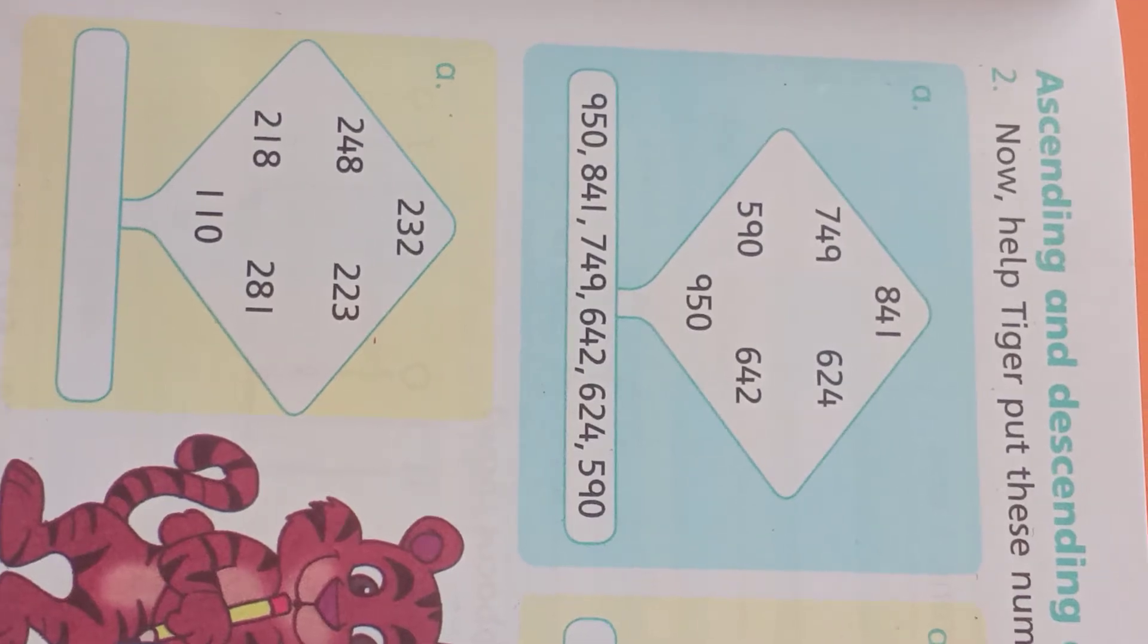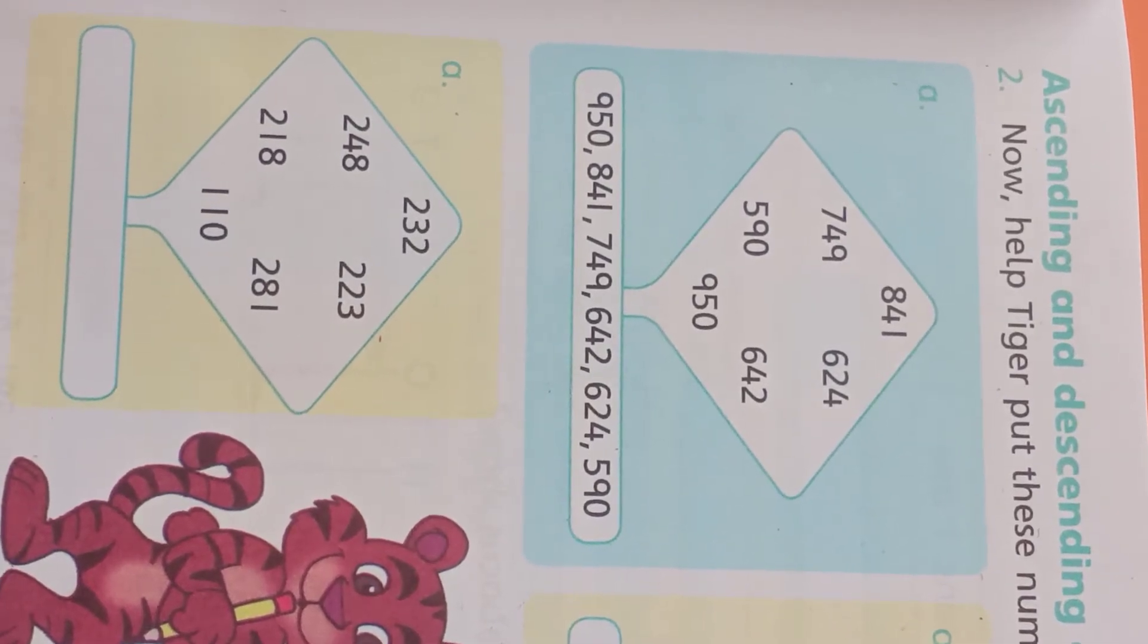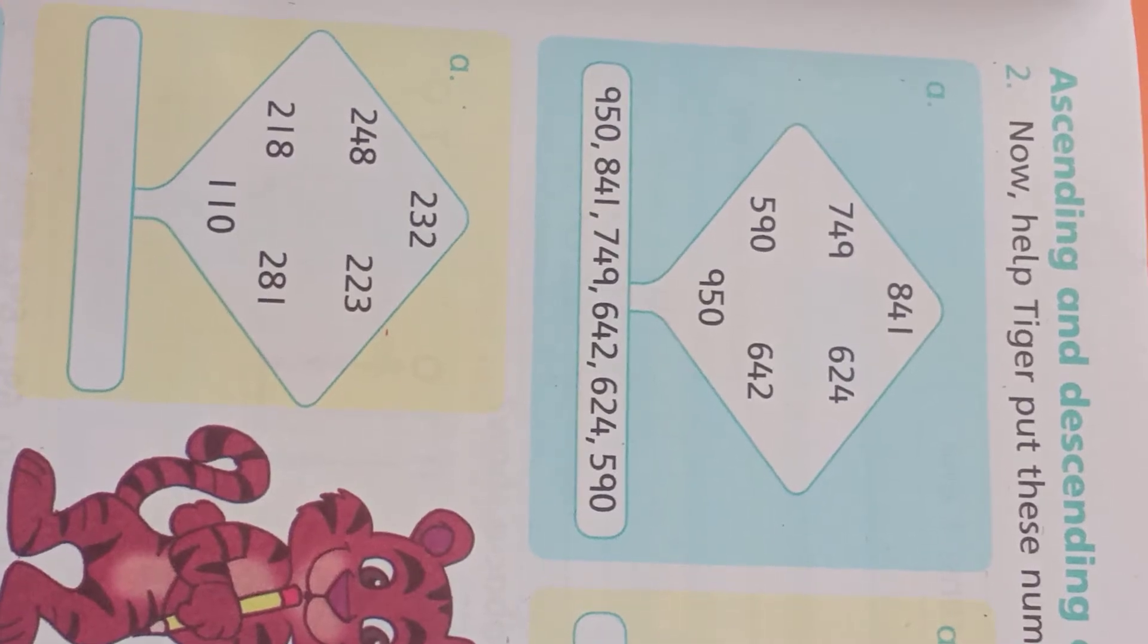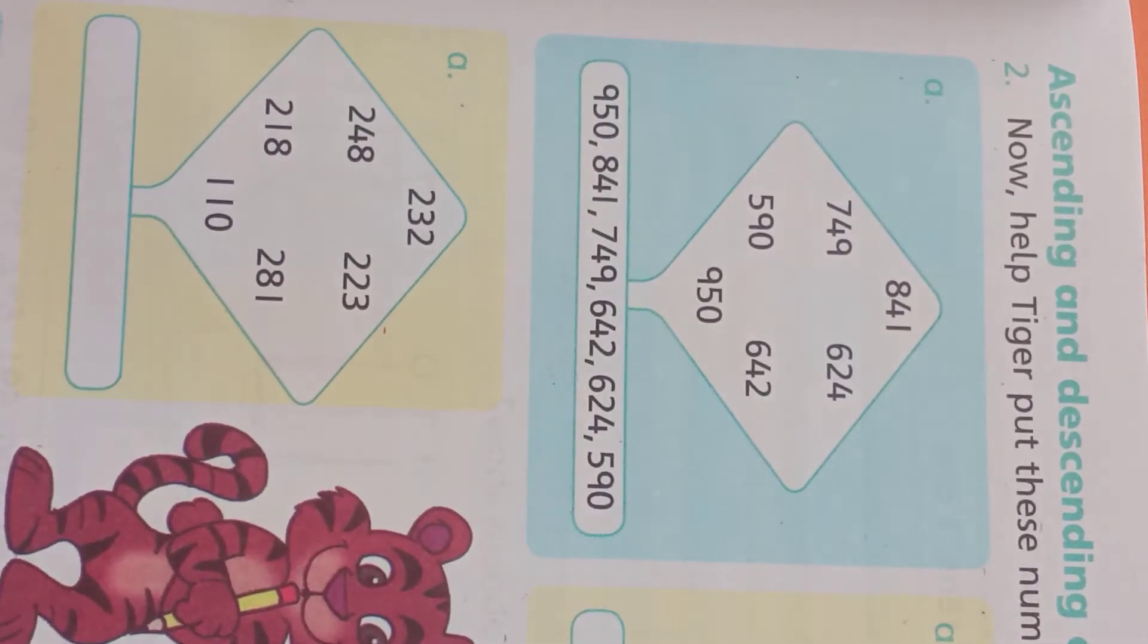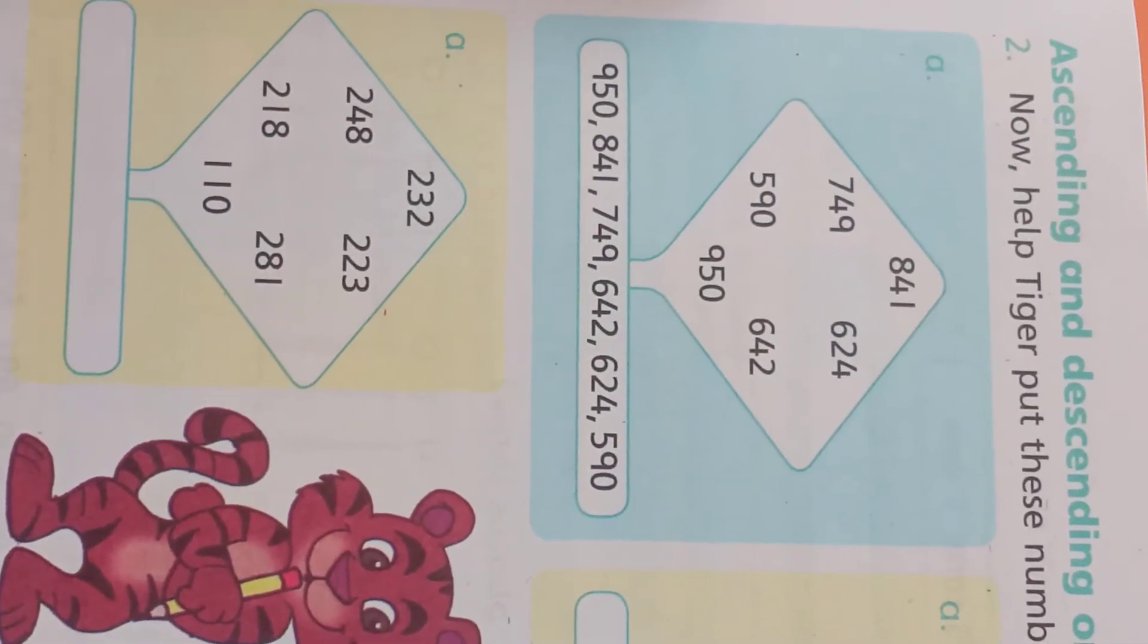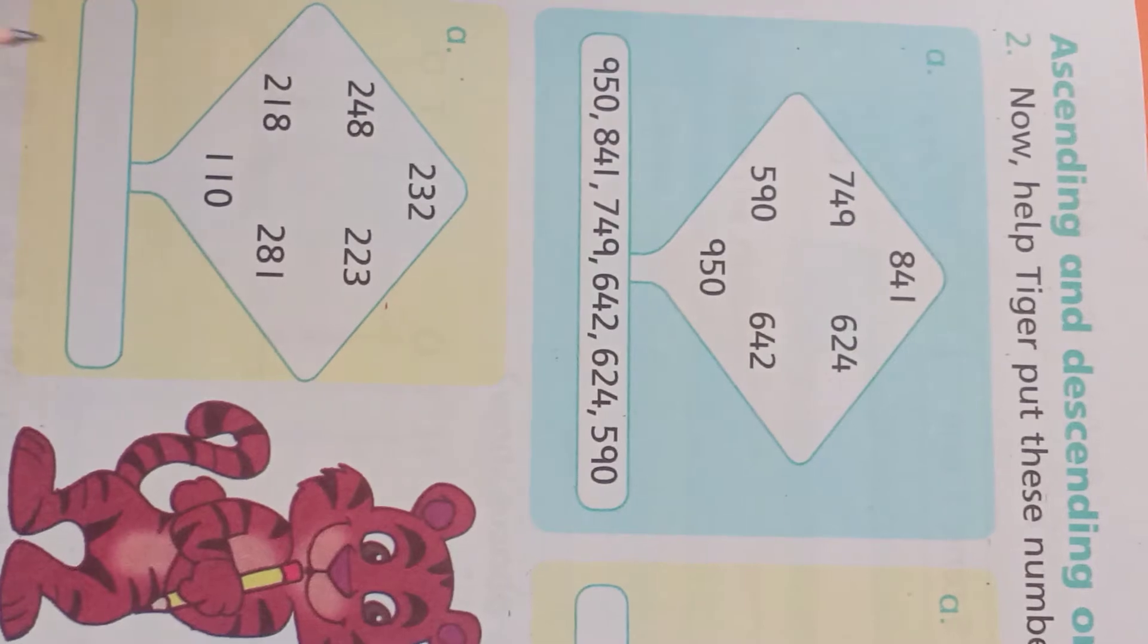Imagine that we have numbers 1, 2, 10. What numbers are? 1, 2, 3, 4, 5, 6, 7, 8, 9, 10. If we go up to 10, then it means that we go from small to large. Ascending order.